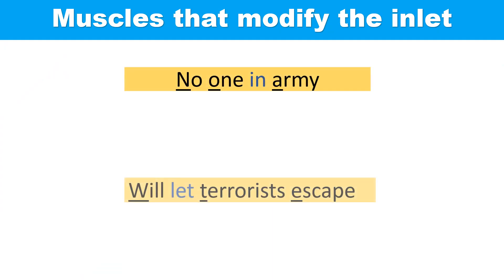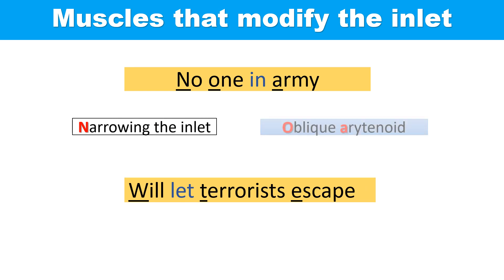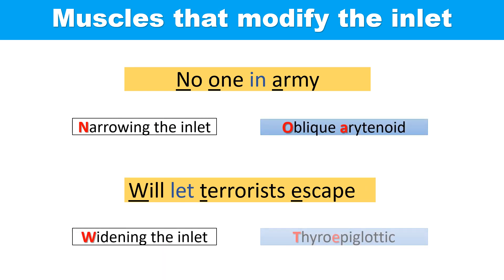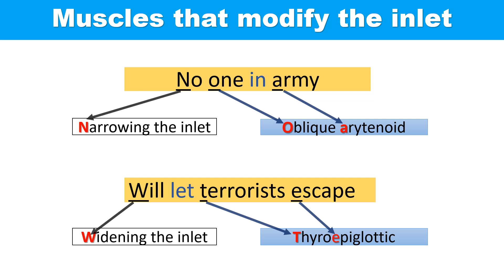Use the mnemonic 'no one in army will let terrorists escape' to remember the muscles that modify the inlet. The oblique arytenoid muscle narrows the inlet, and the thyroepiglottic muscle widens the inlet.